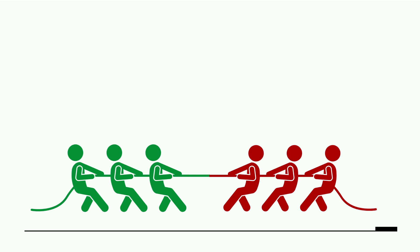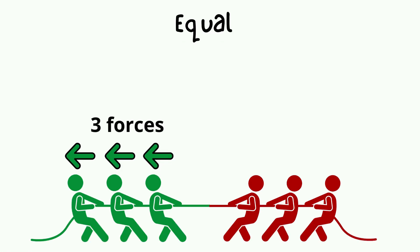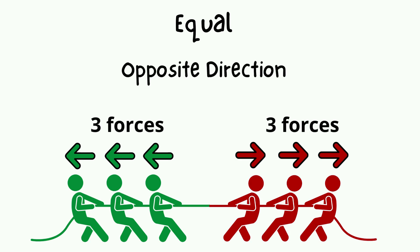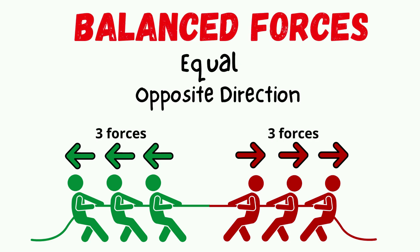Lastly, let's look at a tug of war contest, where every person has the same strength. The forces are equal because there are three forces from the green team and three forces from the red team. They are in opposite directions since the green team pulls to the left and the red team pulls to the right. With this, there are balanced forces because they are equal and in opposite directions.